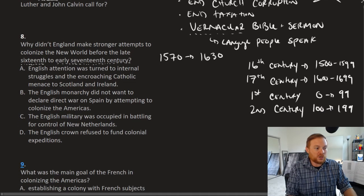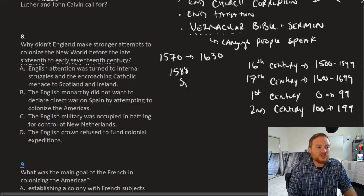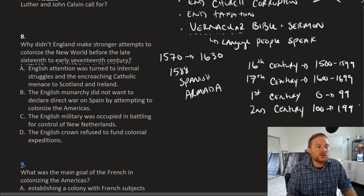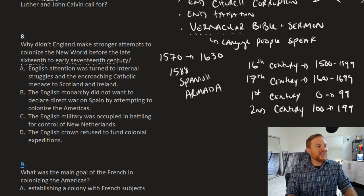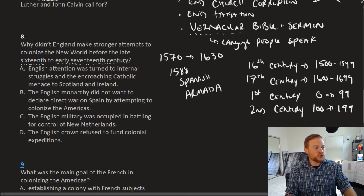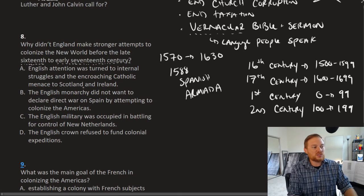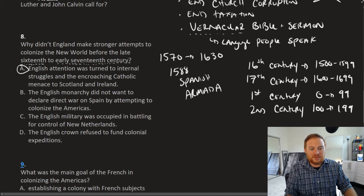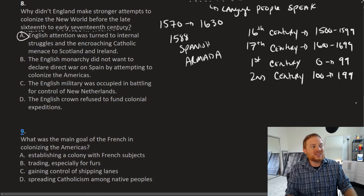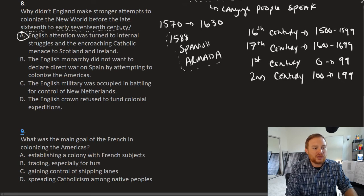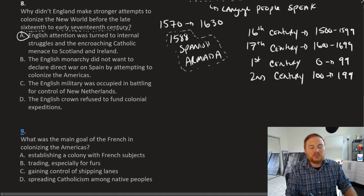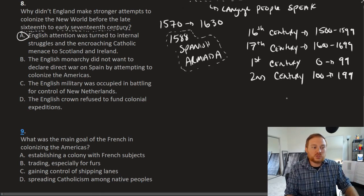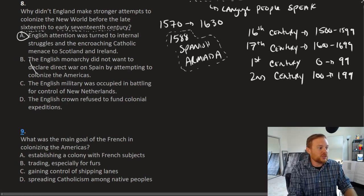Really the one event that we focused on or that we talked about was the Protestant Reformation was going on during this particular period of time. The Anglican Reformation was going on. The wars of religion were going on. And if we want to get more specific, 1588 was the Spanish Armada. So looking at these answer choices, A, English attention was turned to internal struggles and the encroaching Catholic menace to Scotland and Ireland. Well, that looks like a potentially good answer there, because that fits some of the criteria of what was going on at that time. Question number B, English monarchy did not want to declare direct war on Spain by attempting to colonize the Americas. Well, the English were already at war with Spain. Spain's attempt to try and make sure that England remains Protestant, that's what forced the Spanish or that's what caused the Spanish to send the Armada.